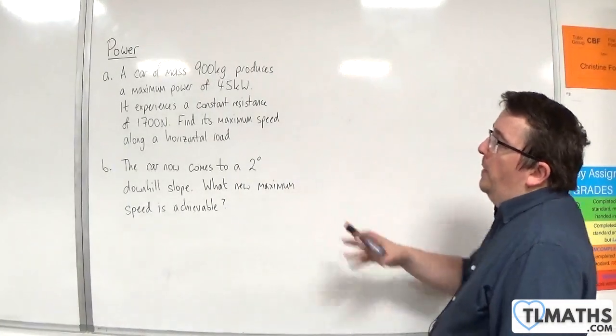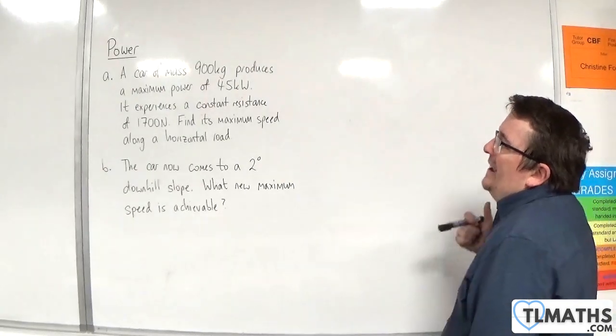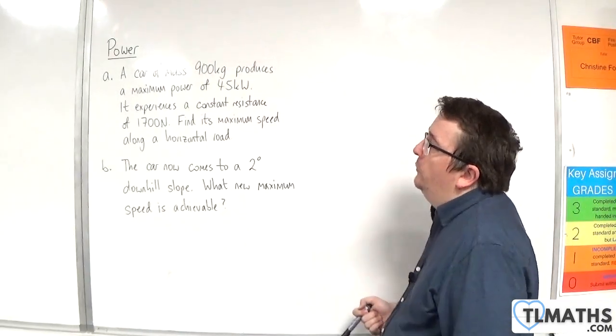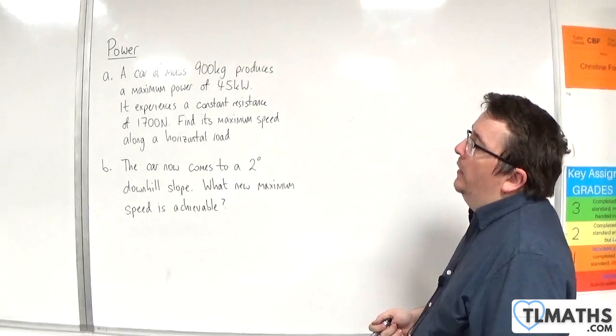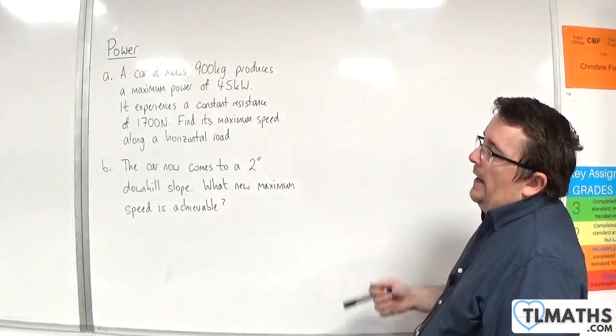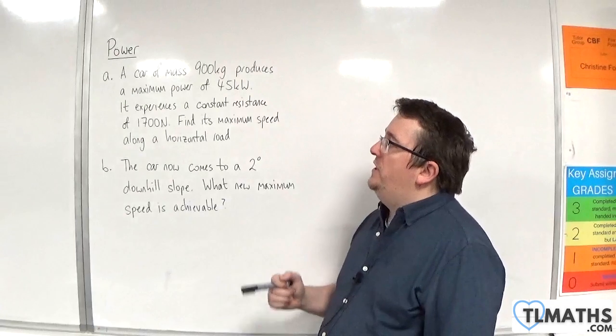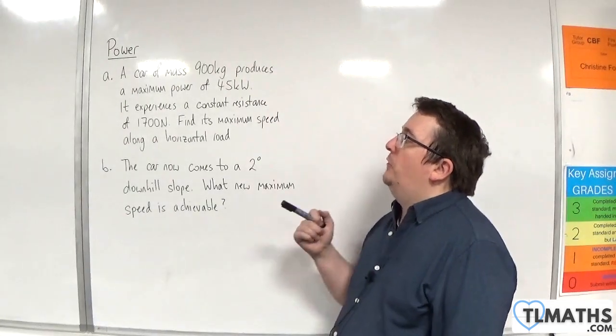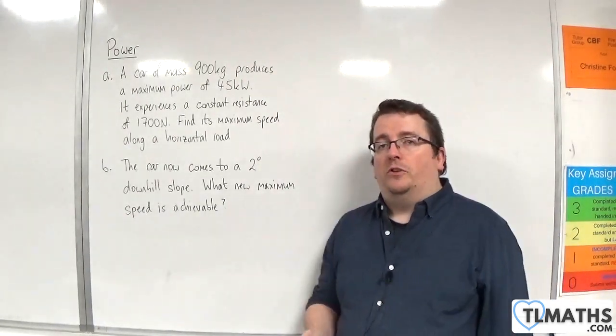In this video, we've got a two-part question. Part A: a car of mass 900 kilos produces a maximum power of 45 kilowatts. It experiences a constant resistance of 1,700 newtons. Find its maximum speed along a horizontal road.